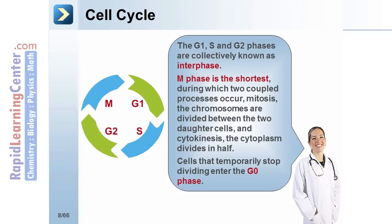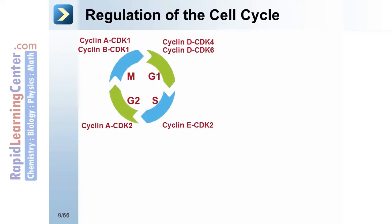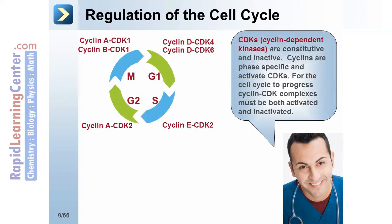M phase is the shortest, during which two coupled processes occur: mitosis, when the chromosomes are divided between two daughter cells, and cytokinesis, which is when the cytoplasm divides in half. Cells that temporarily stop dividing enter the G0 phase. Regulation of the cell cycle is controlled by cyclins and cyclin-dependent kinases, or CDKs.